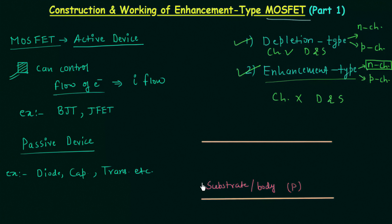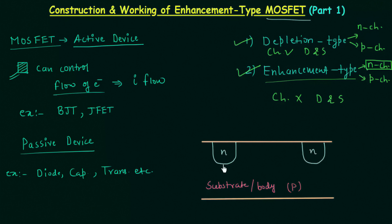The meaning of substrate is layer and we will fabricate our device over this layer. After this, two N type wells are created. This is the first N type well and this is the second N type well. As you can see there is a junction between the two N type materials and the P type material, so two depletion regions with the same width will be formed. Out of the two N wells, one N well will act as source and the other N well will act as drain.